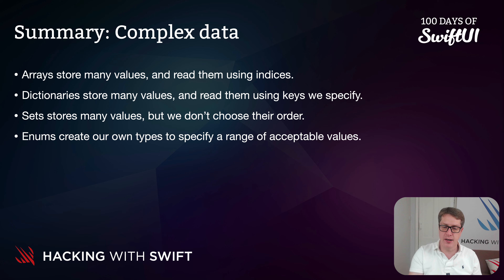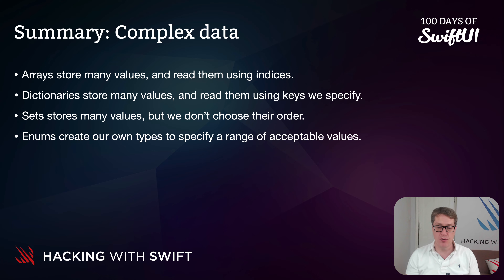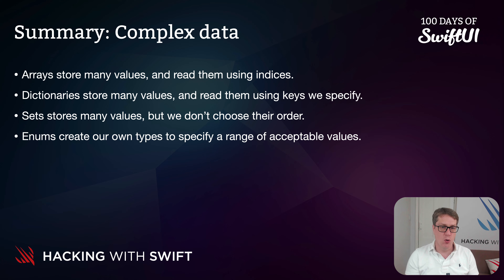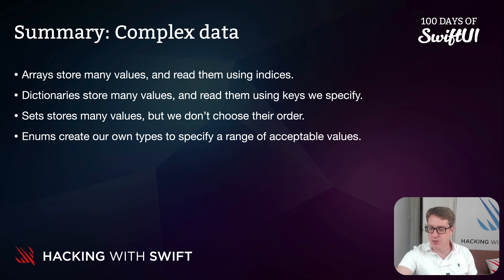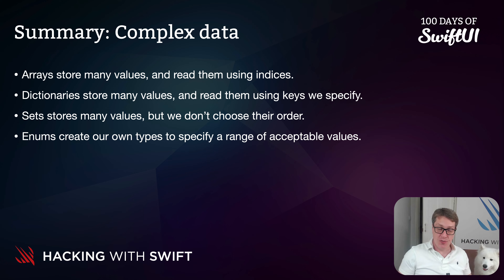Then there are enums. They let us create our own specific types to handle a range of values that make sense in our program — things like a list of actions the user can perform, or a list of files we're able to write, or types of notifications and more. Very, very helpful for limiting data to specific values.